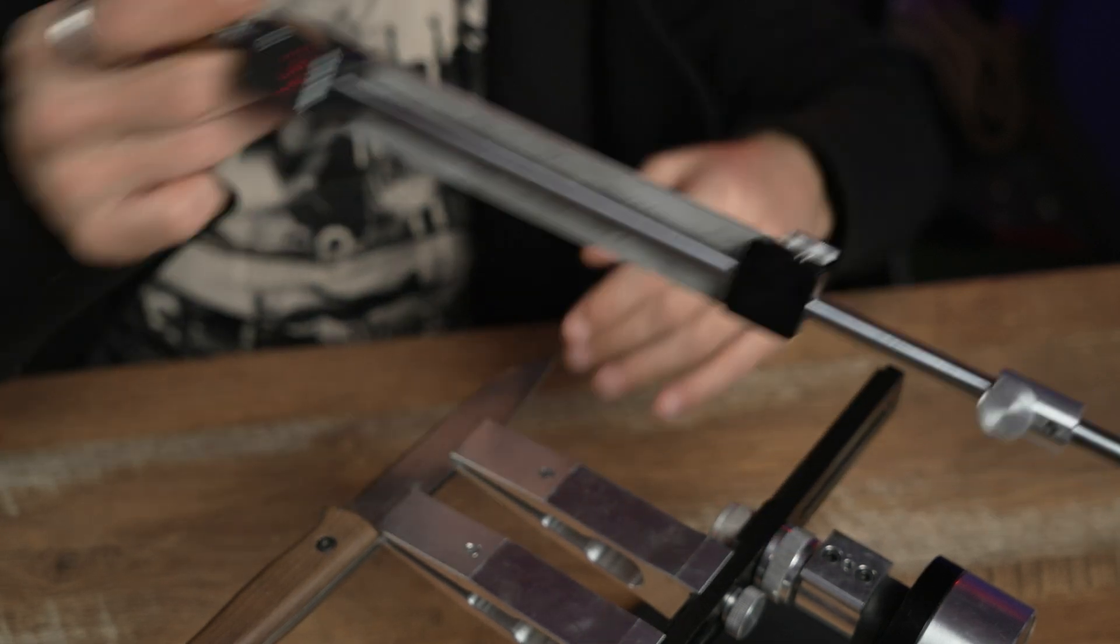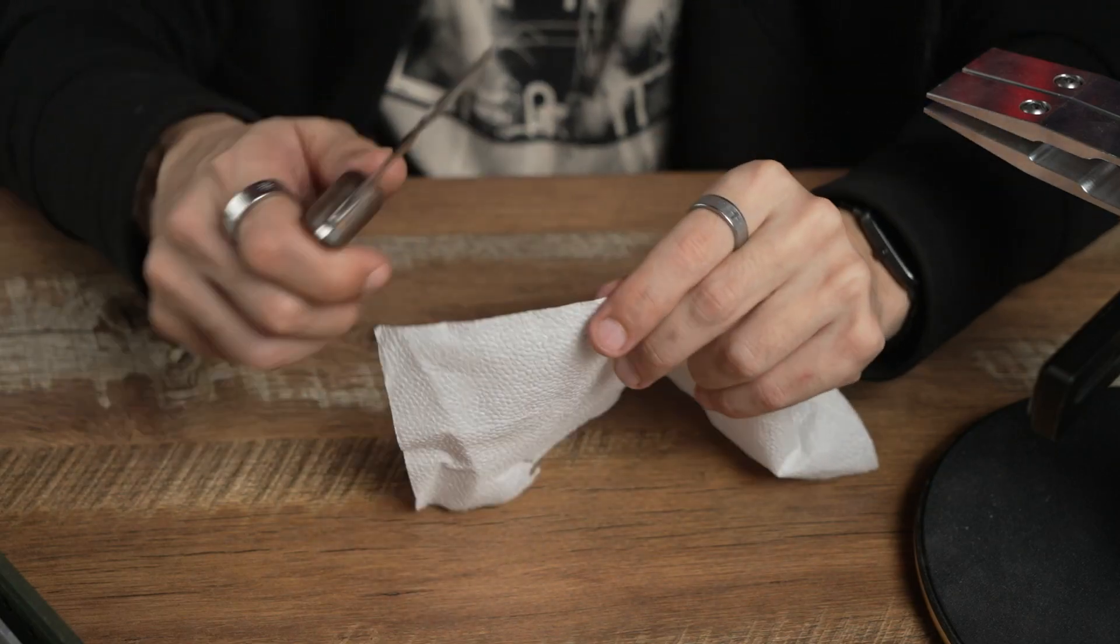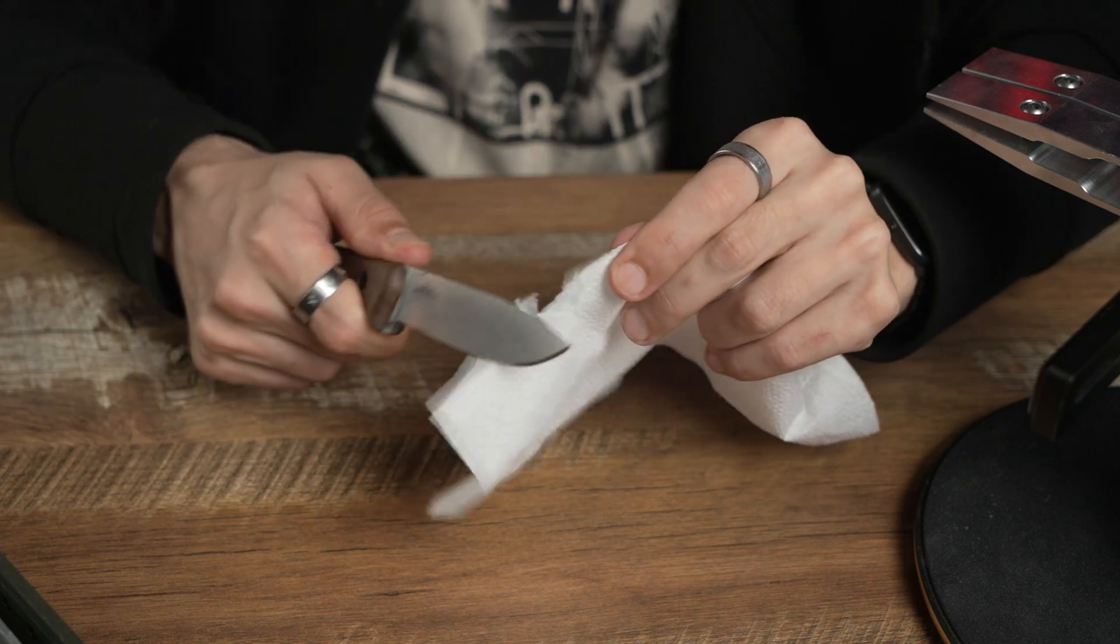If we didn't remove the burr completely, the knife will rip the paper instead of cutting it.